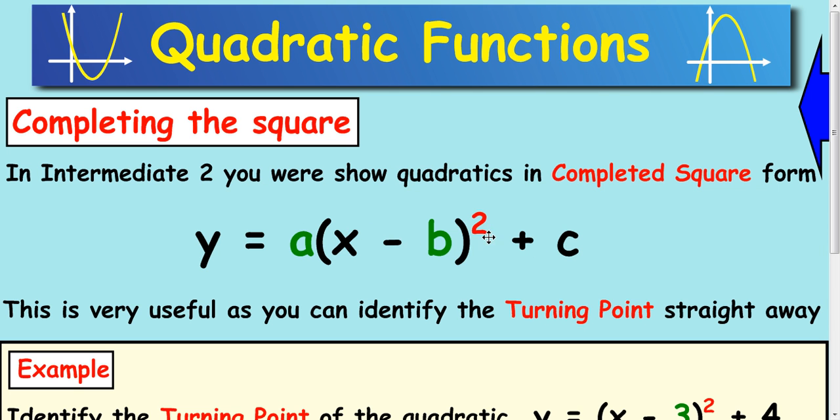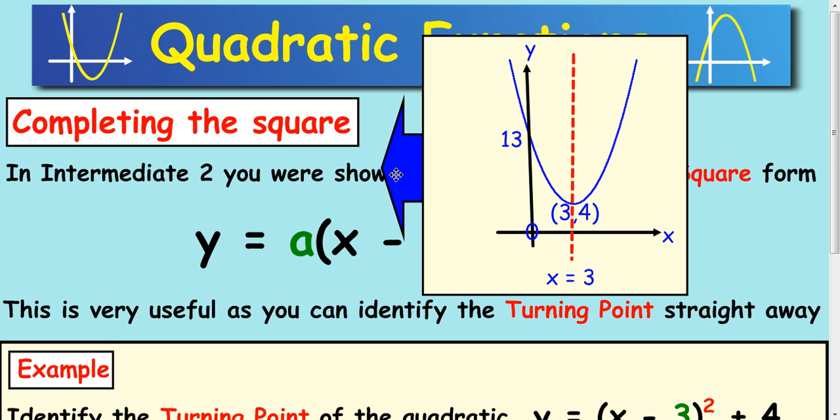Now why do we want to do that? What's good about this form? Well it's really good for identifying where the turning point is straight away. If you have it in this form you can quickly identify this value here and the two coordinates of it.